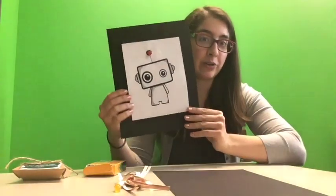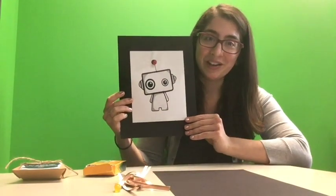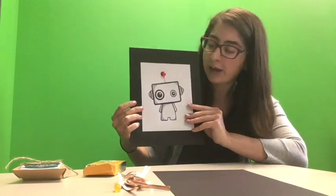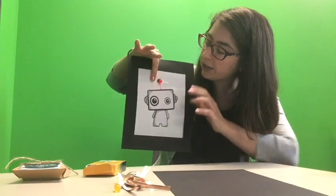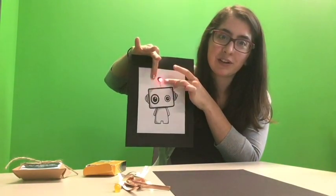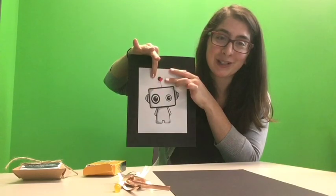So I have an example right here. I did not create this piece of art, but it is a great example of something that you can light up. So I've already done this circuit in the back, and all you need to do is just press on either side of here, and it lights up, because there are paper circuits behind here. Really cool.